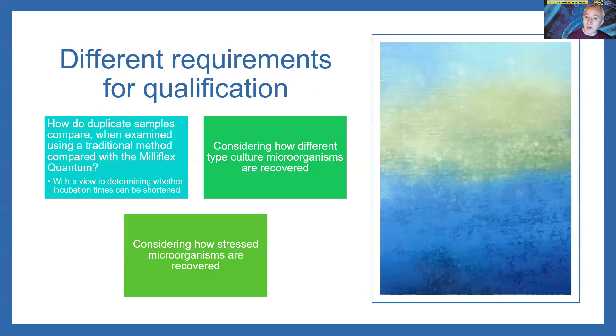Before any alternative methods can be used, they must undergo some form of comparative testing with the method that we're seeking to replace, so some form of validation. In order for that to be meaningful, we need to apply some form of statistical verification. We need to assess the accuracy of the method, and we're attempting this using type cultures. We also need comparability, which we do by testing samples simultaneously with both methods. And we can introduce other elements like ruggedness as well.